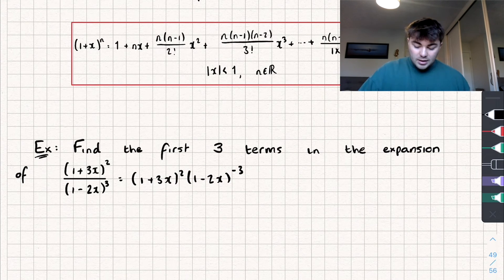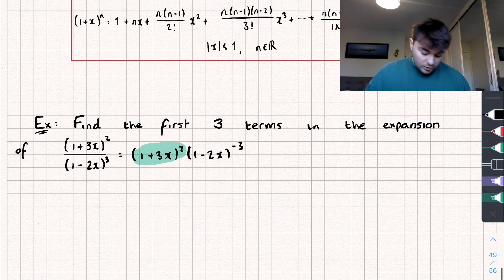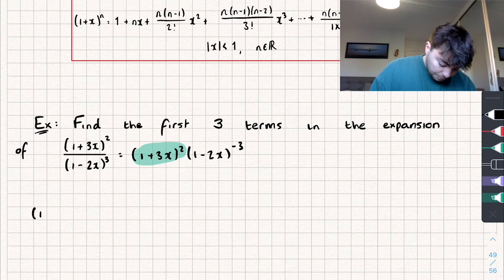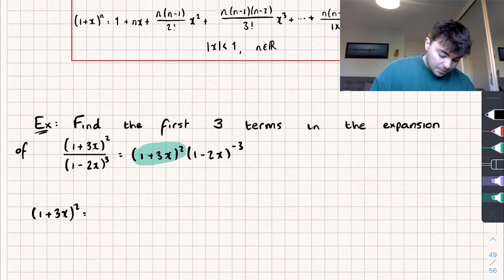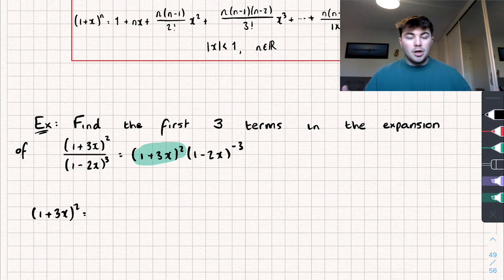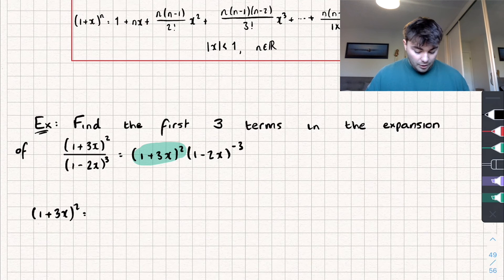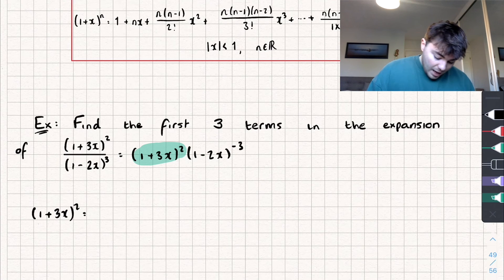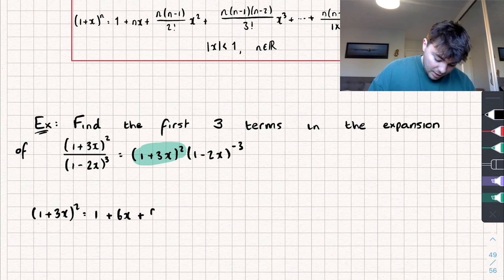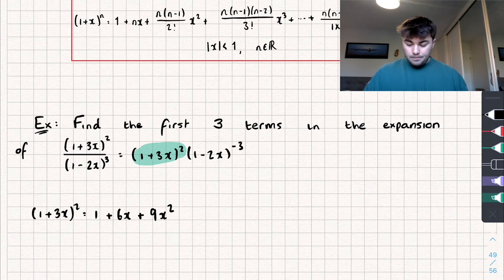Let's expand this first part, (1+3x)². We don't even need to use our binomial expansion formula because it's just a binomial to the power of two, so we're just squaring it, which is pretty easy to expand. If we expand it we'll get 1 + 6x + 9x².